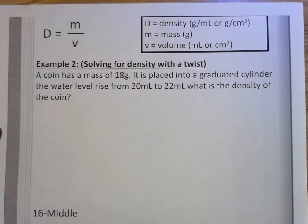This problem has a little bit of a twist to it because there is a secondary step before you can actually plug into the formula. The question asks: a coin has a mass of 18 grams. It is placed into a graduated cylinder. The water level rises from 20 milliliters to 22 milliliters. What is the density of the coin?